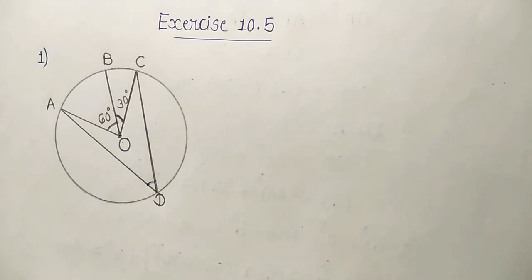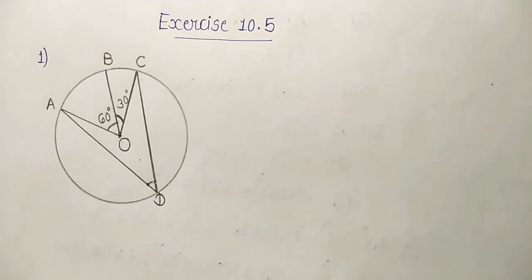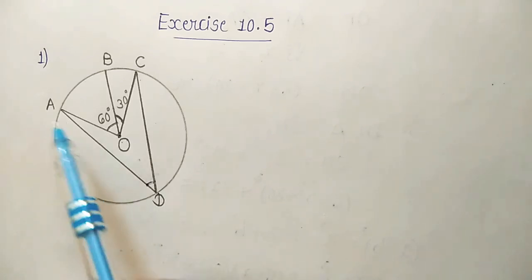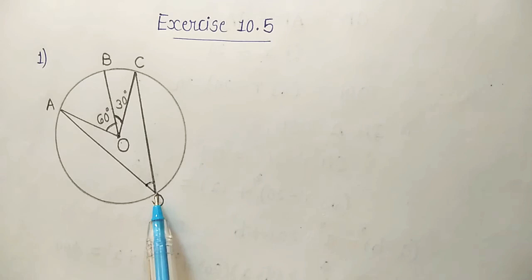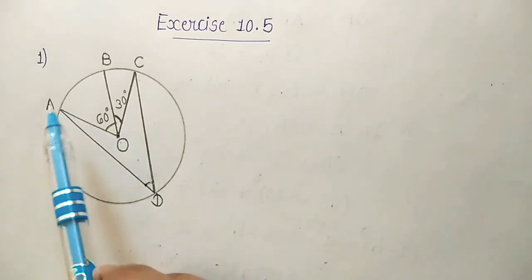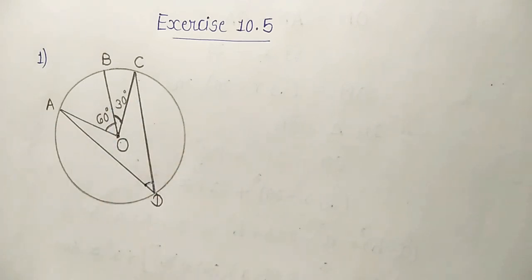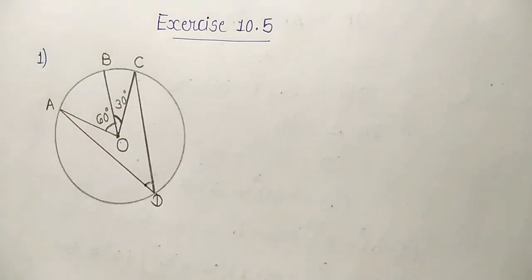Now, according to theorem 10.8, we know that the angle subtended by an arc at the center is double the angle subtended by it at any point on the remaining part of the circle. So, angle AOC will be double than angle ADC. Now, how will we find angle AOC? Do we have the value of it? No.